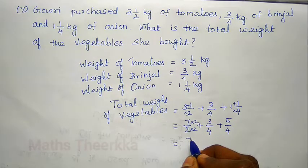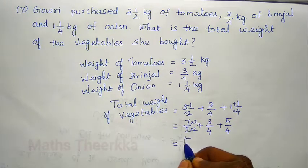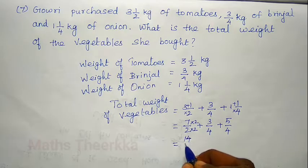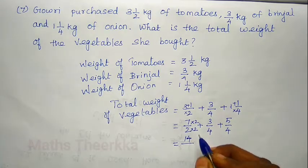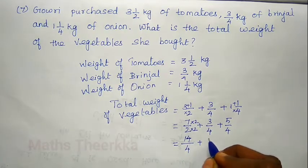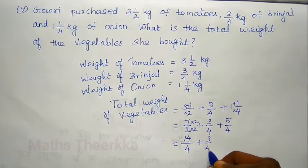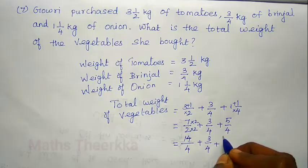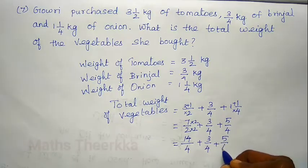So 7 into 2 equals 14, giving us 14 by 4, plus already 3 by 4, plus 5 by 4. Now the denominators are all like fractions, equal to 4.